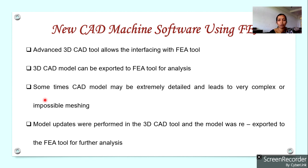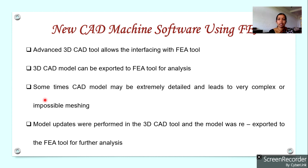CAD performs all the design calculations and produces a model from a manufacturing point of view — in order to physically manufacture that particular product. So the CAD model will be a very detailed model; it incorporates all the details needed for manufacturing, making it a very complex structure containing very small data required for manufacturing.